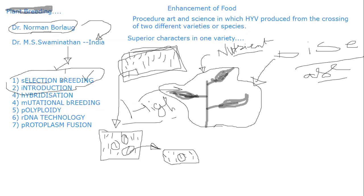Plants with superior qualities are selected and their seeds are collected; others are rejected. This is selection breeding — it is the oldest procedure. Introduction refers to growing exotic species under supervision in our area. Different varieties that grow in other countries' atmospheres, when introduced and grown here under our soil and temperature conditions, observed in our agricultural field — that is called introduction.